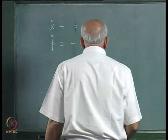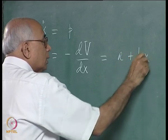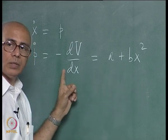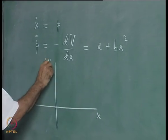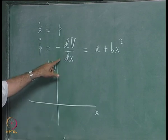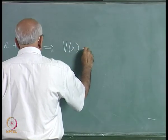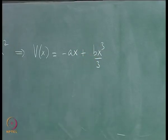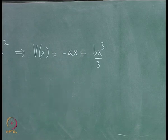The next non-trivial case is to take the force as a plus bx-squared, where a is the tuning parameter. Integrating and changing sign gives the potential V(x) equal to minus ax plus bx-cubed over 3 — a cubic curve.